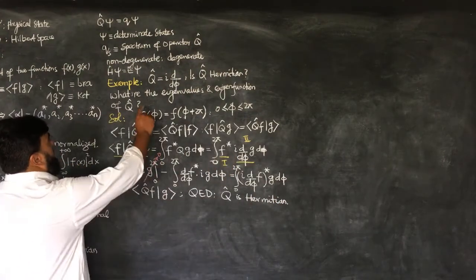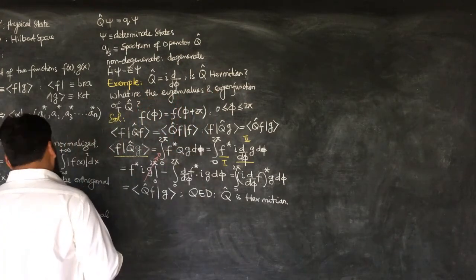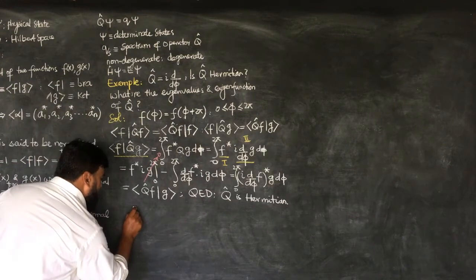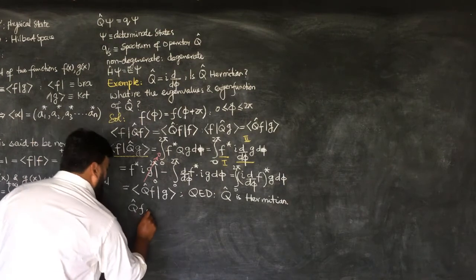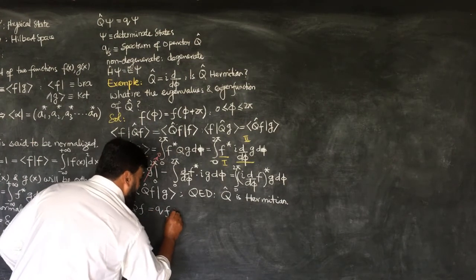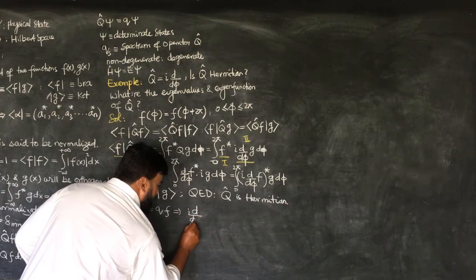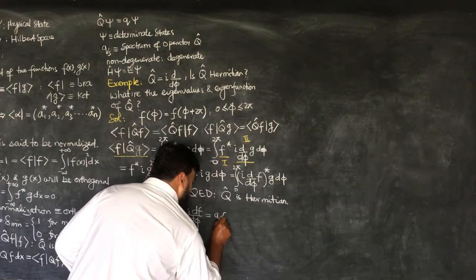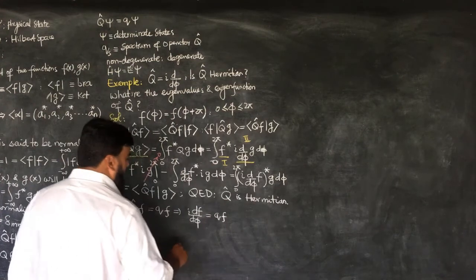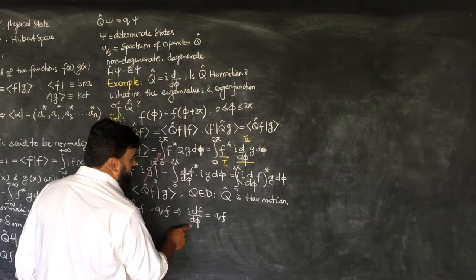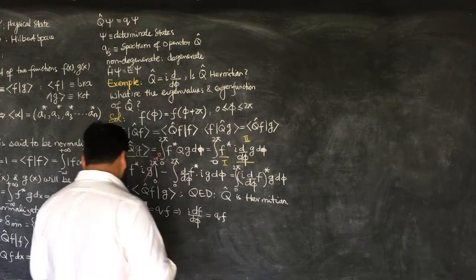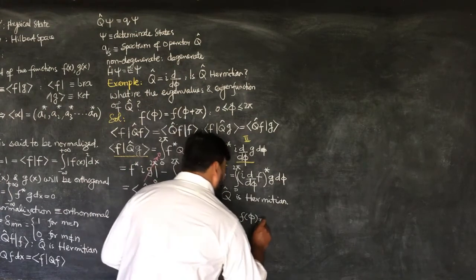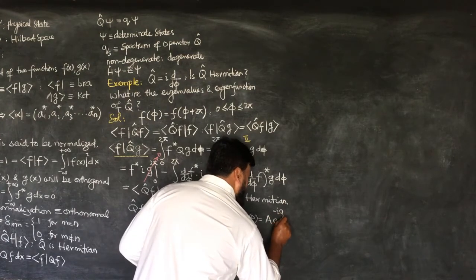Now the second part: what are the eigenvalues and eigenfunctions of Q? Writing the eigenvalue equation: the operator i·d/dφ applied to F equals q·F. Solving this differential equation by separating variables — moving dφ and F — taking the logarithm and then the exponential gives the solution F(φ) = A·e^(−iqφ).